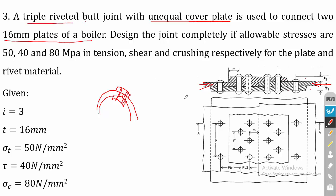It is triple riveted, which means on the left side there will be three rivets and on the right side another three rivets. If you see the top view, you get a structure showing the joint. If it is zigzag then you will have triple rivets — one, two, three, then another one, two, three. You can refer to the image.